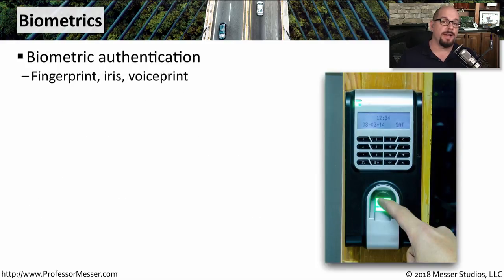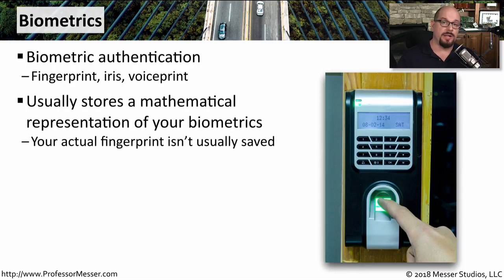Biometrics is a way to provide authentication that is tied specifically to you as an individual. This might be your fingerprint, it could be an iris, or it could be a mathematical representation of your voice print. Most biometric systems are not storing your actual fingerprint or an actual picture of your iris. Instead, it's storing a mathematical representation of that, sampling different areas of your fingerprint and storing that information to identify you.